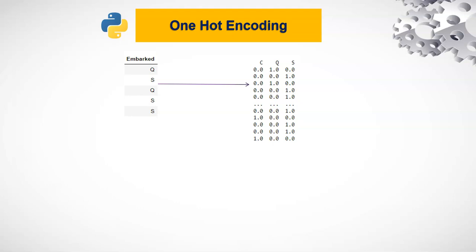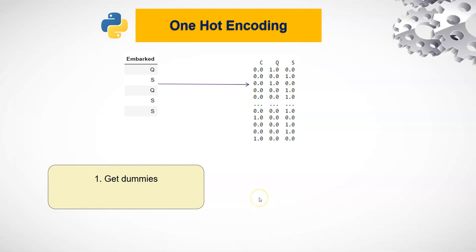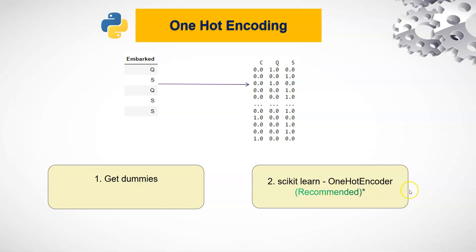There are various ways of doing one-hot encoding using packages available in pandas and scikit-learn, but we can also create our own custom one-hot encoder — I have a separate video on that which was asked in an interview, so you can check that later. In this video we are going to see the automated way using available packages. The first way is using get_dummies, which is a pandas library function, and the second is scikit-learn's OneHotEncoder. I would recommend the latter, and I'll discuss the advantages during the hands-on.